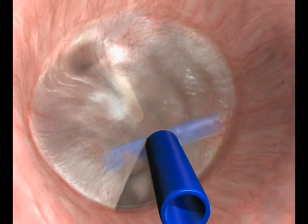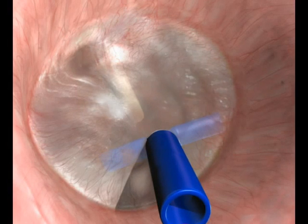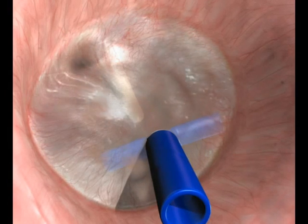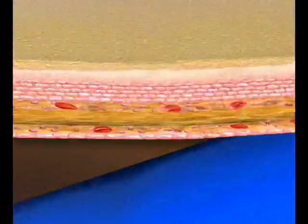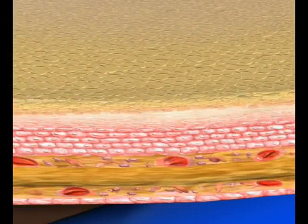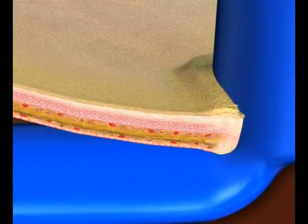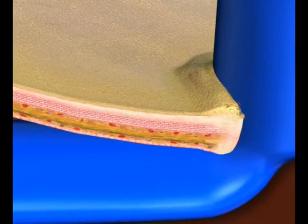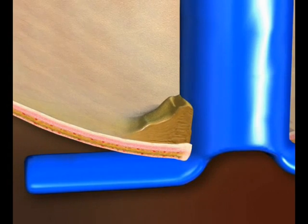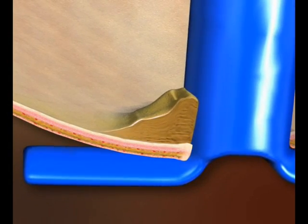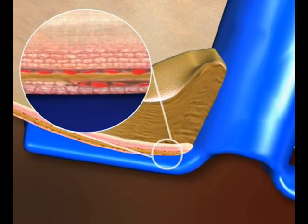The relationship between the tube and the eardrum is affected by the natural migration of the epithelium from the germination area near the umbo to the periphery. The epithelium accumulates on the tube, pushing it and tilting it posteriorly. The inner flange presses on the rim of the perforation, causing avascular necrosis, which widens the perforation when the tube is extruded.